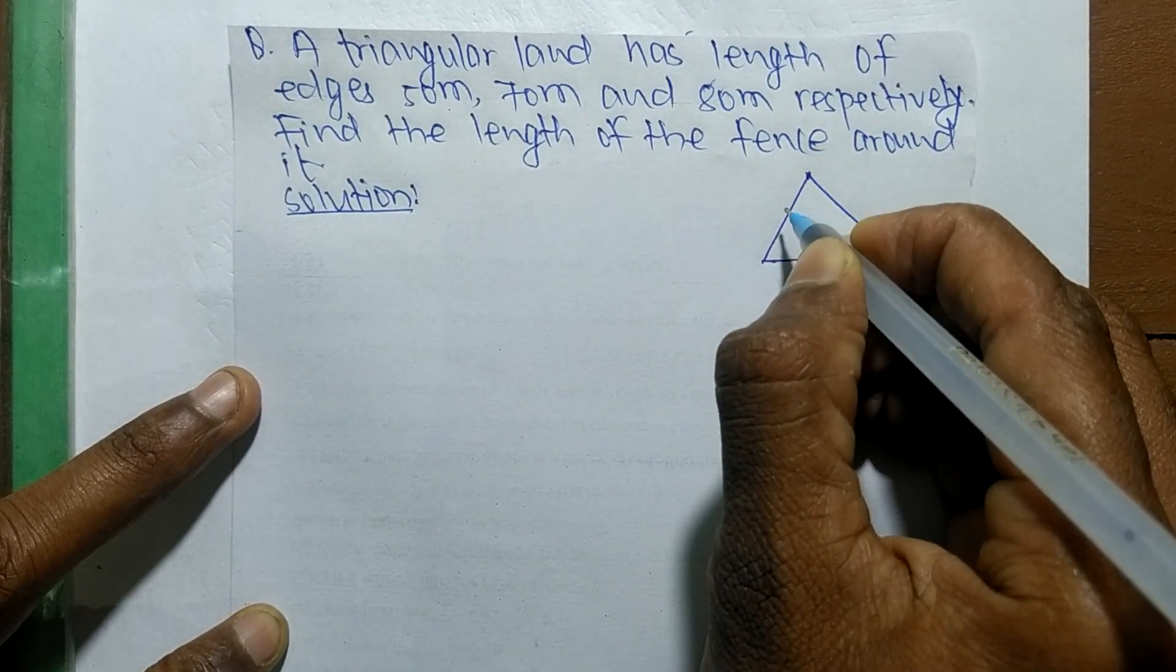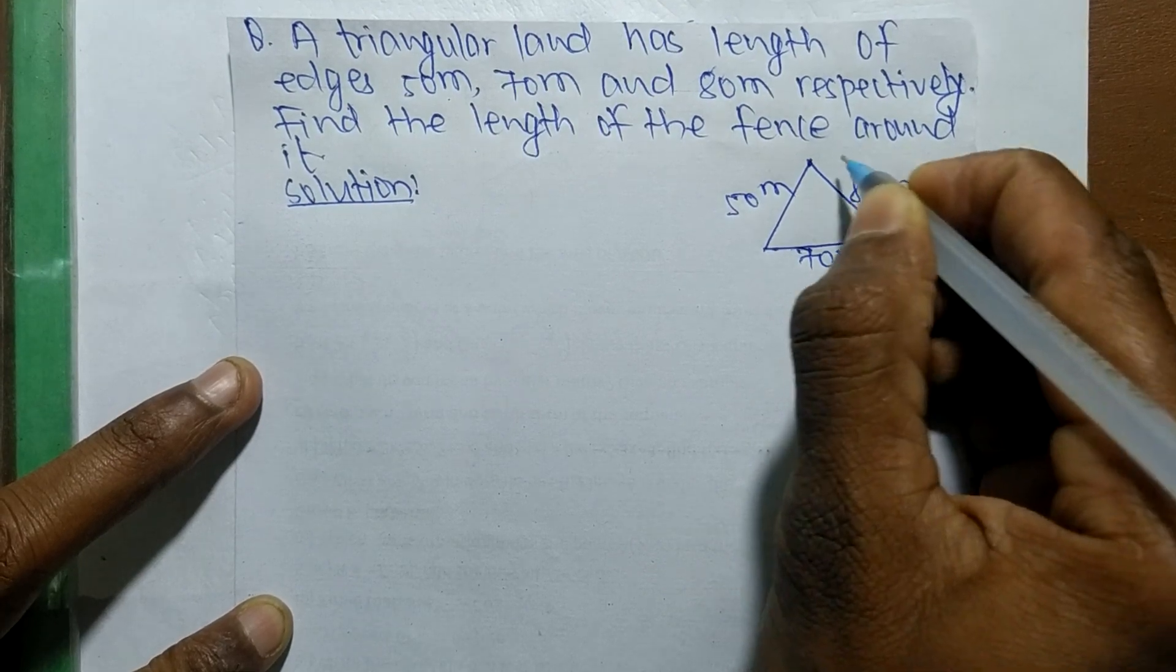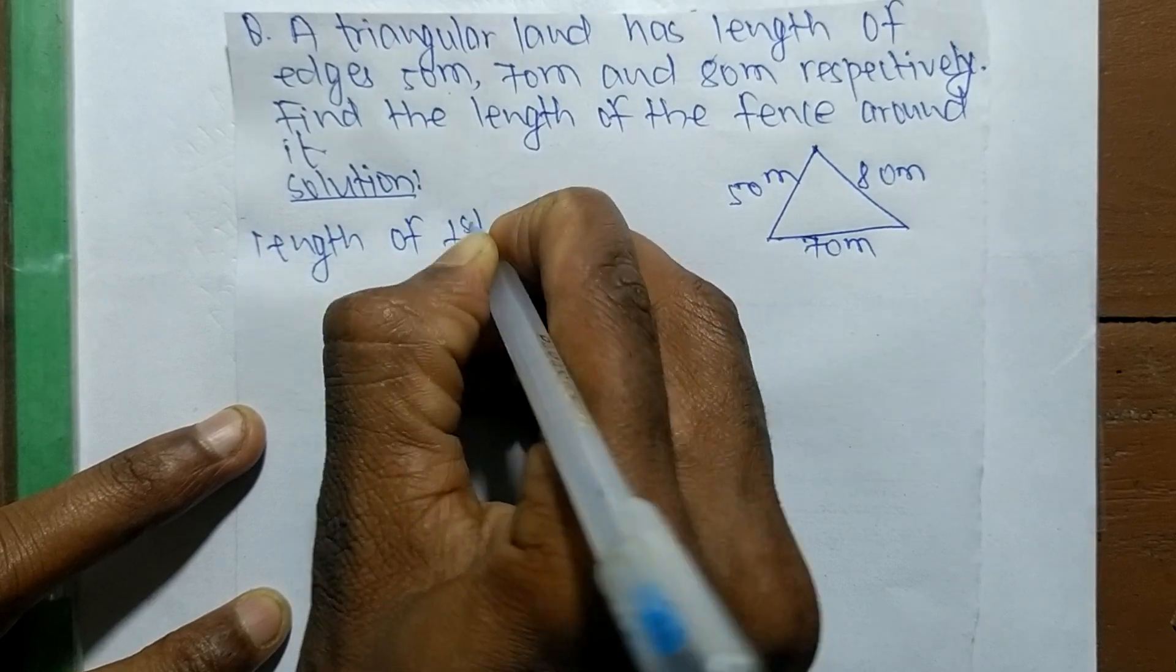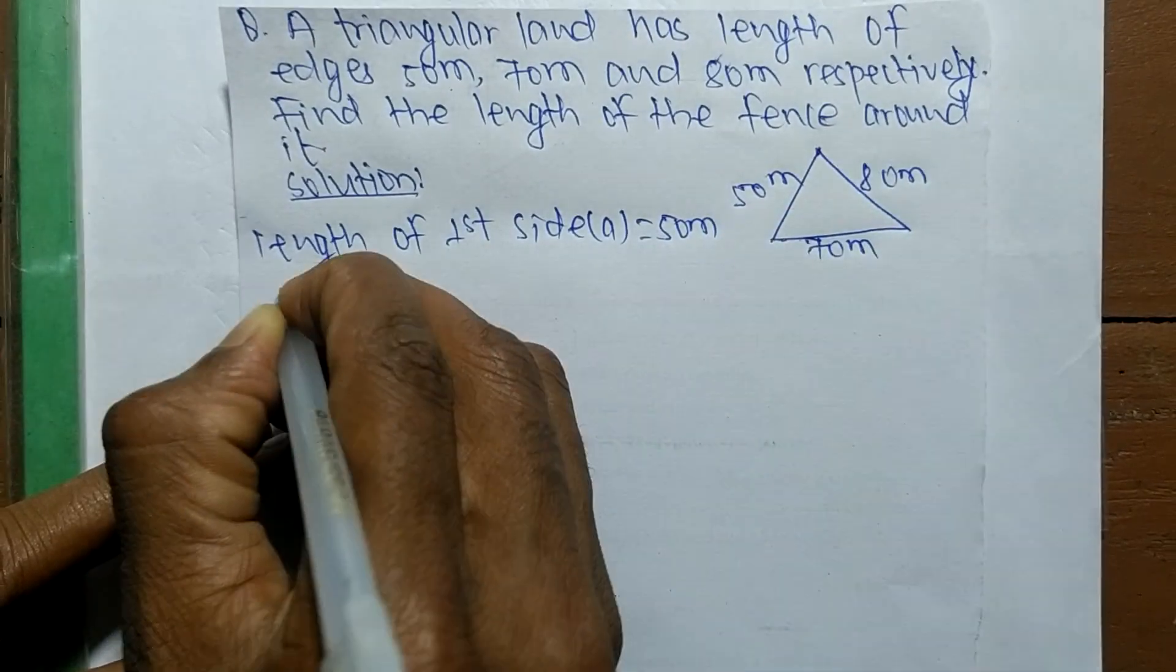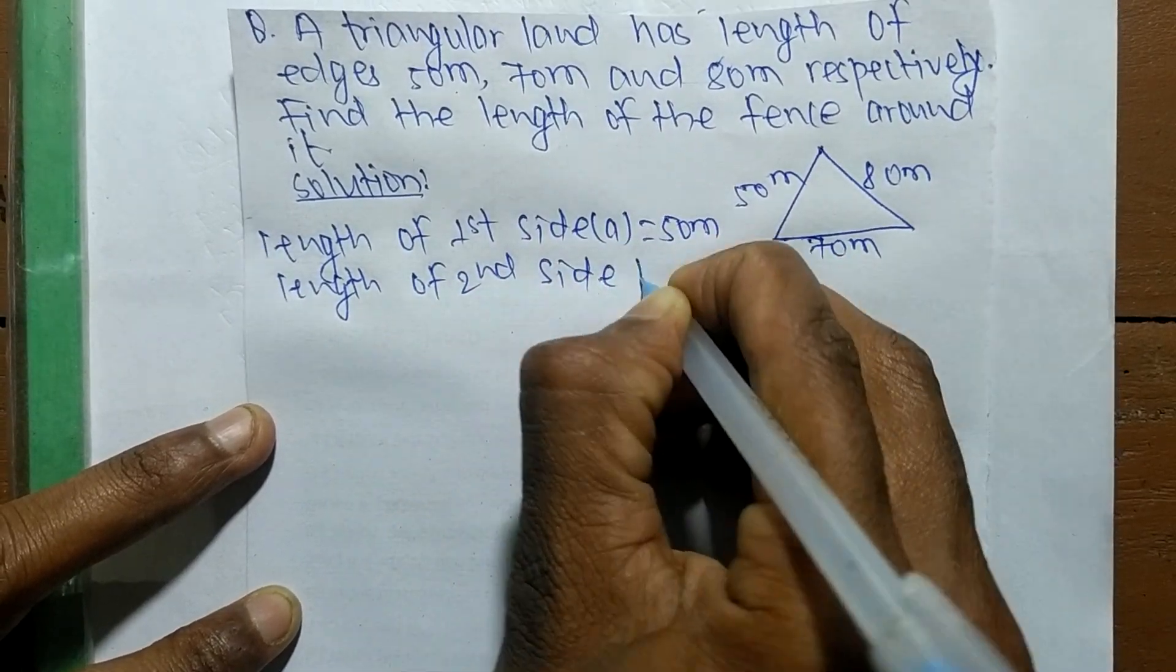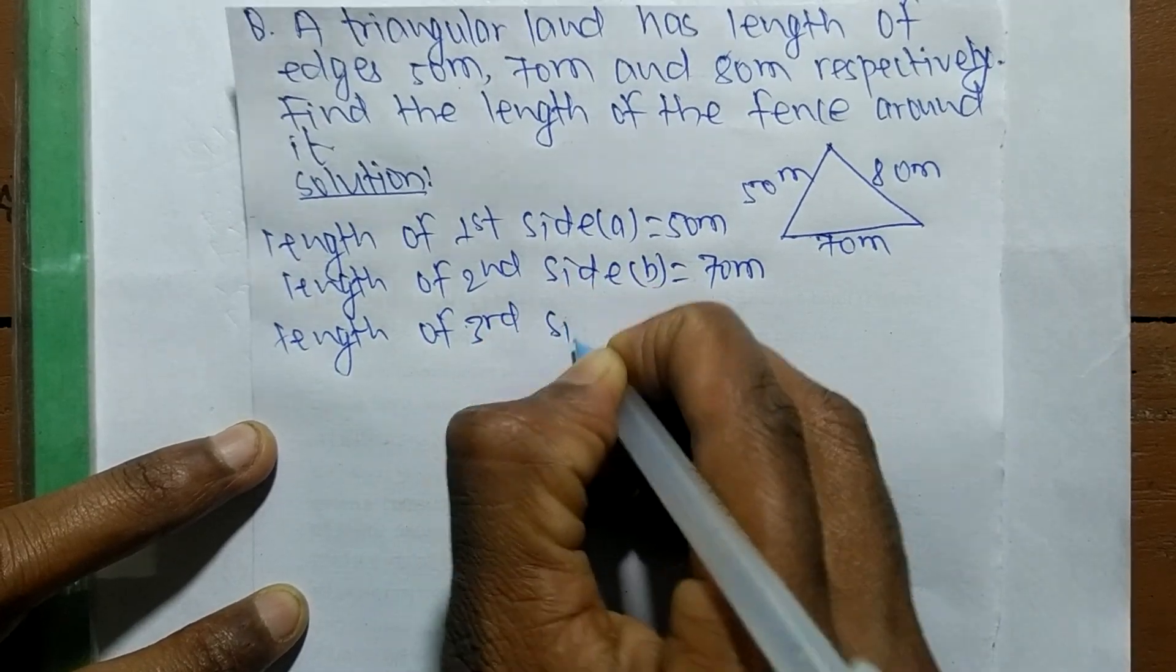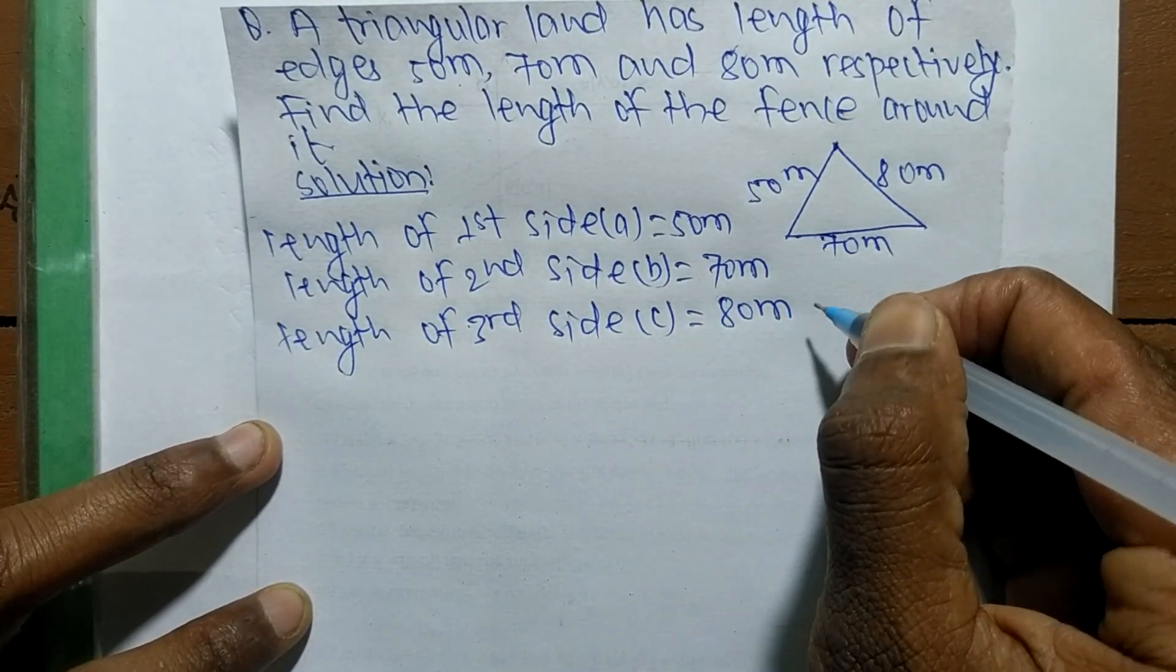The sides are 50 meter, 70 meter and 80 meter, and we have to find the length of fence around it. We are given the length of sides, so we let the length of first side a = 50 meter, length of second side b = 70 meter, and length of third side c = 80 meter.